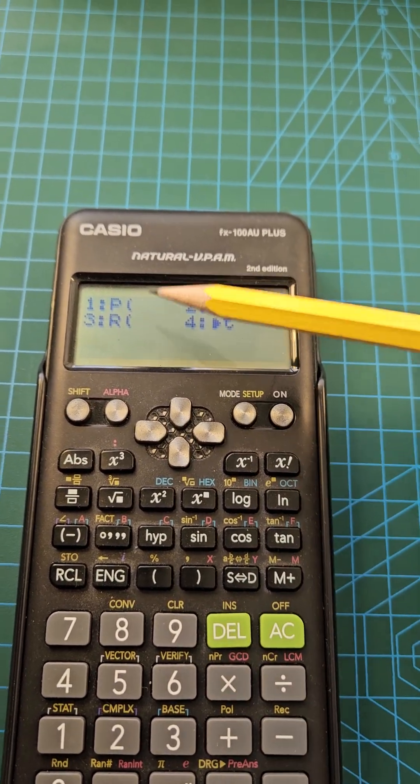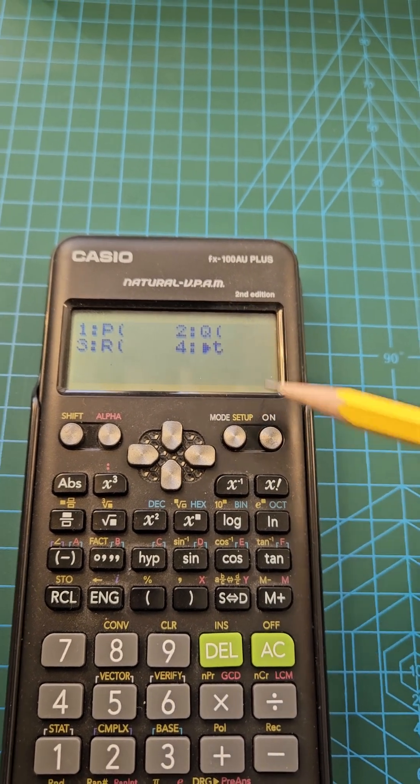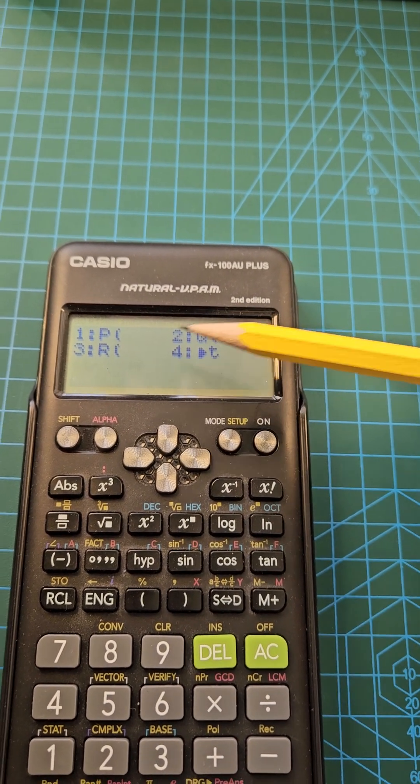We're presented with three options: option one, option two, and option three. We'll ignore option four at this point. So we have p, q, and r.